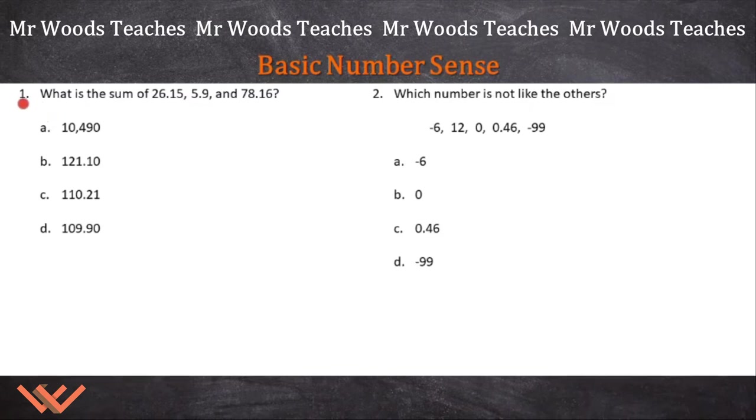So here we have number one. What is the sum of 26.15, 5.9 and 78.16? I'm going to show the non-example first. What I've seen in the past is where people do this. They do 26.15 and then 5.9, they just throw it right down here. 5.9 and 78.16. So they have 6, 1, 8, and 7. And see how it's kind of sloppy and they add all this up and they're going there's 14, there's 20.